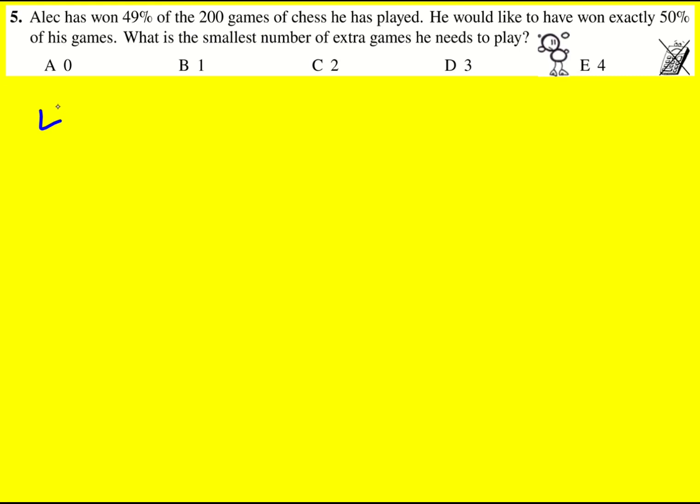A few ways to do this question. So I'm going to work out what 49% of 200 is to start with. And that is actually 49 over 100 times 200. So these cancel out and I get 98.